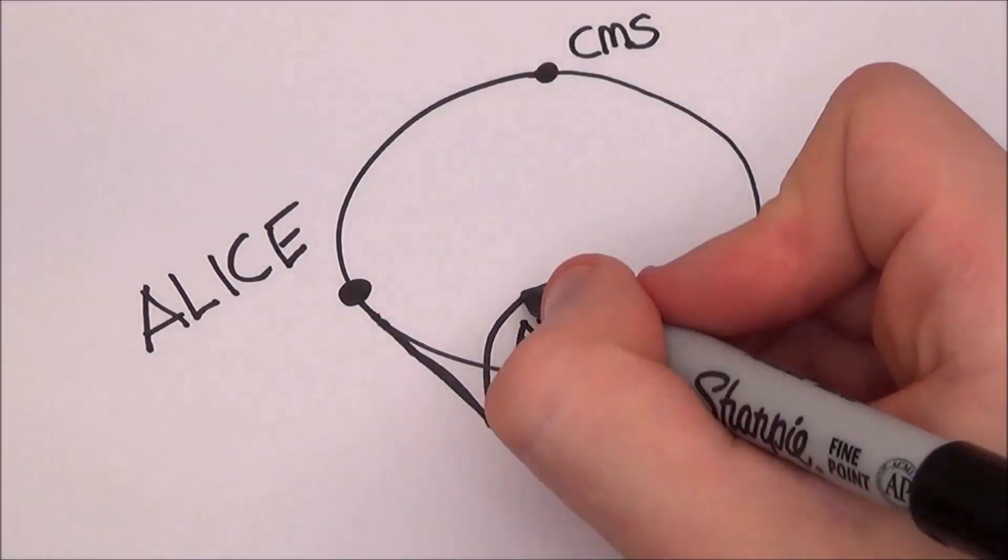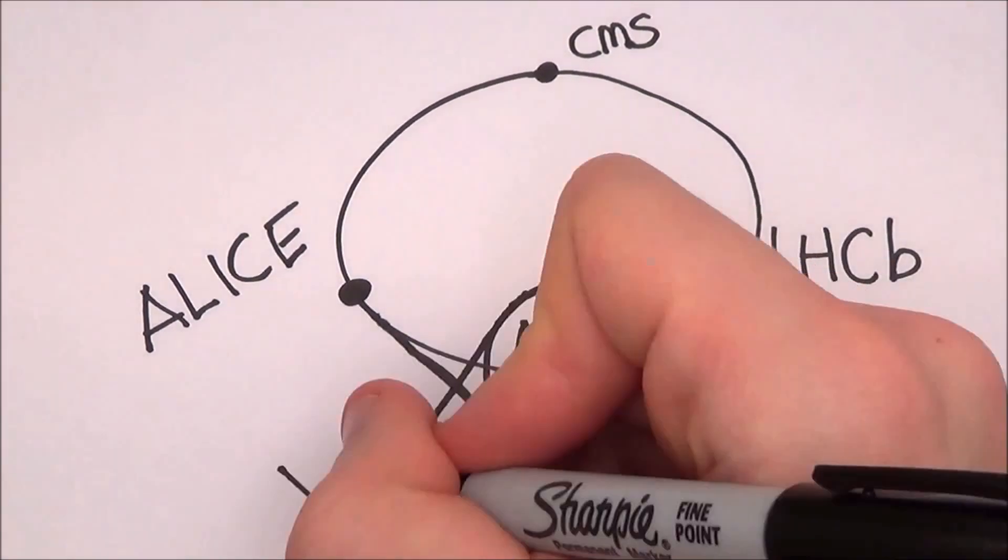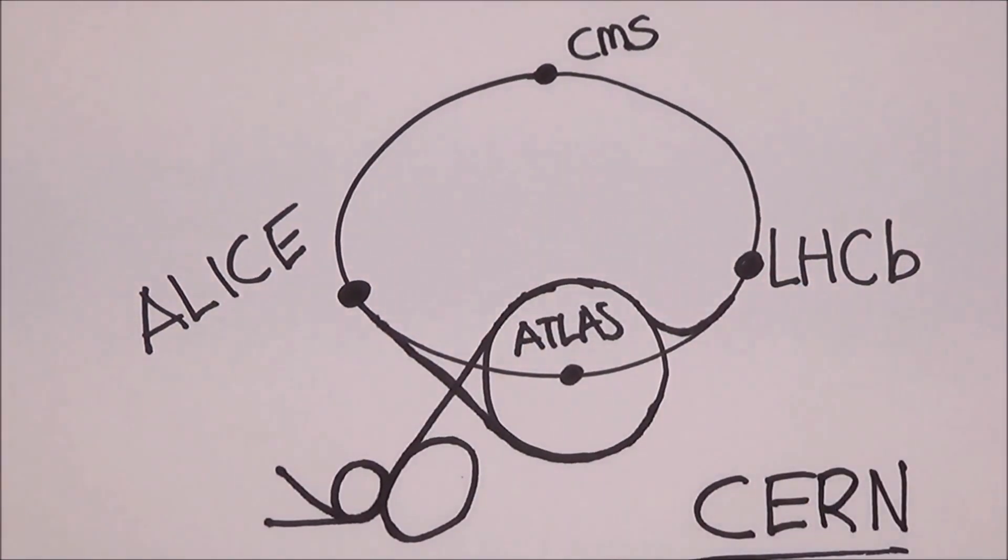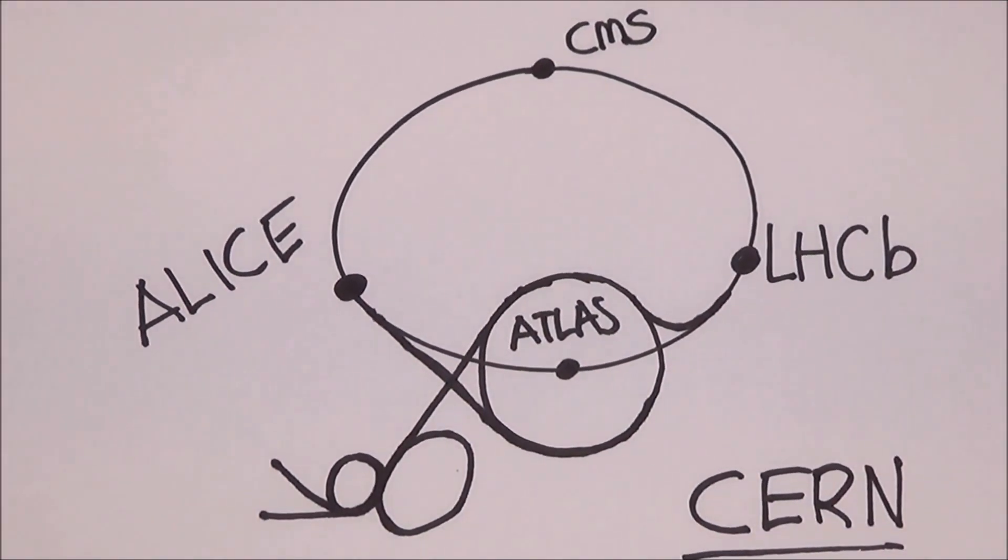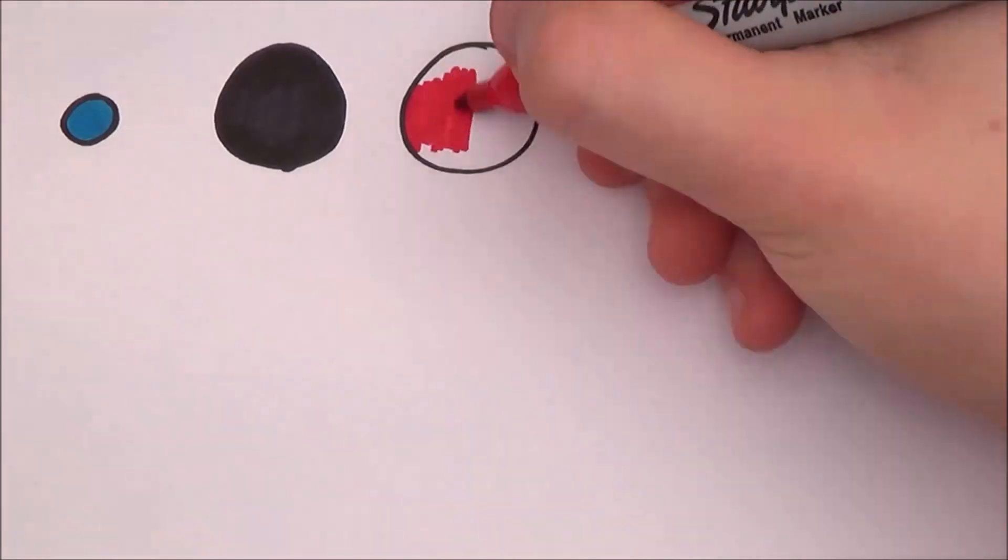The particles are then made to collide at 4 locations, at each of the 4 particle detectors from before: CMS, ATLAS, ALICE, and LHCB.